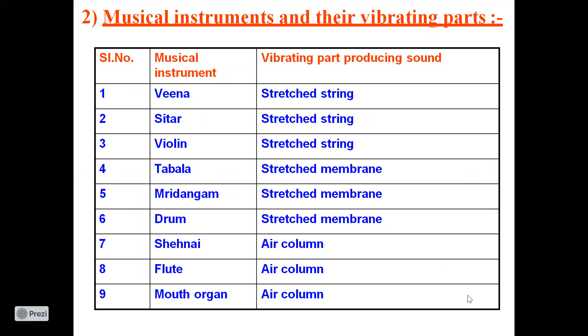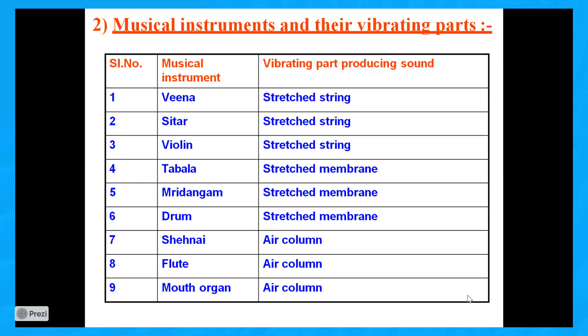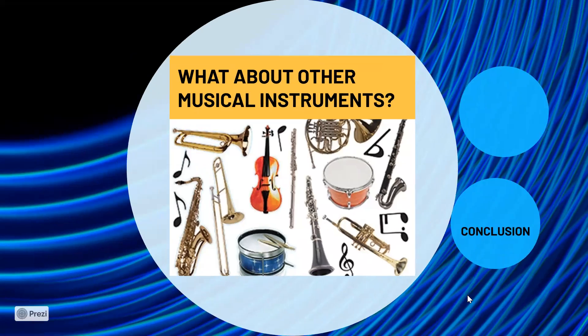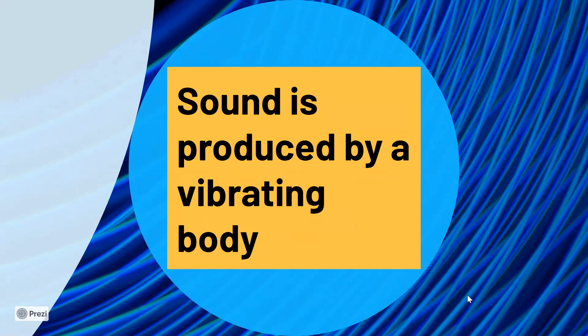And there are some other category of instruments, shehnai, flute, mouth organ. These are producing sound due to vibrations created in air column. Does vibrations create sound only in musical instruments? No. Every material which is producing sound is due to vibrations. So we can conclude that sound is produced by a vibrating body.